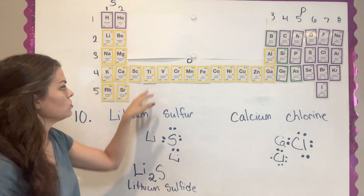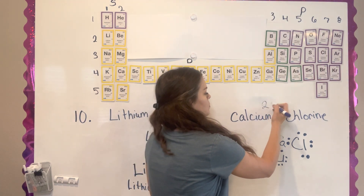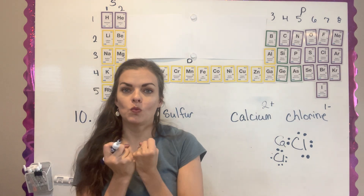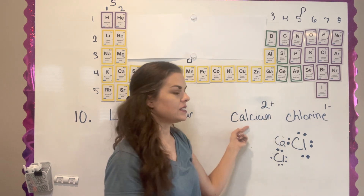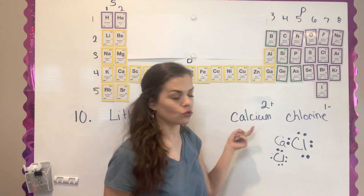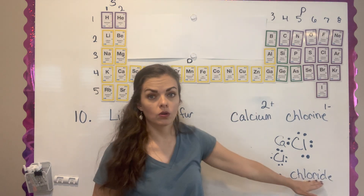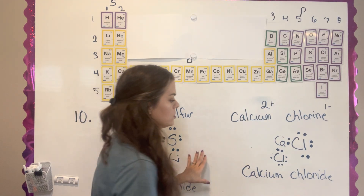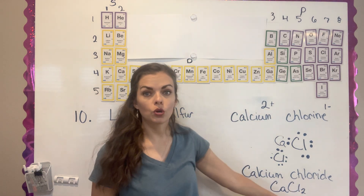If you get stuck on drawing this, you can say calcium is in the second row so it's giving away two electrons — write a two plus — and chlorine has seven and wants to take in one — a one minus. You can think through that it takes two chlorines to take the two calcium electrons. We write this as calcium chloride — drop the ending to make it -ide — and the formula is CaCl₂.